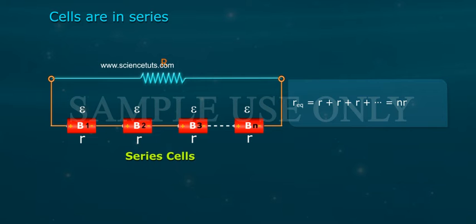Equivalent internal resistance of N cells in series: r equivalent equals r plus r plus r plus so on equals N r. Total resistance of the circuit equals capital R plus N r.